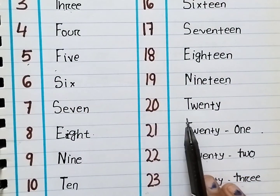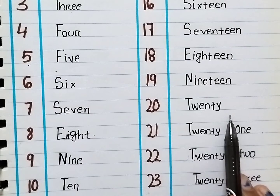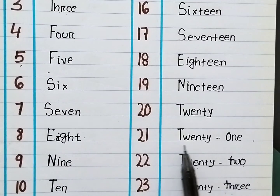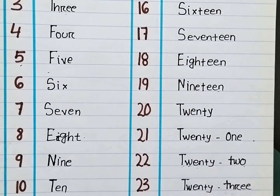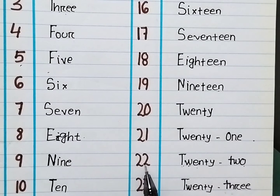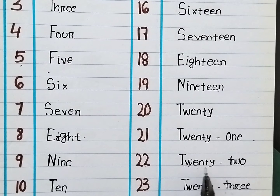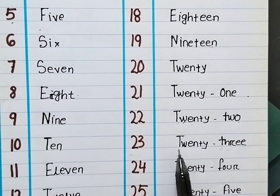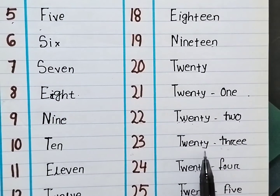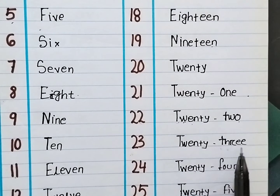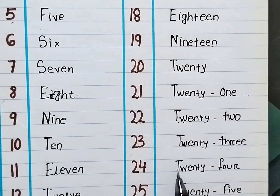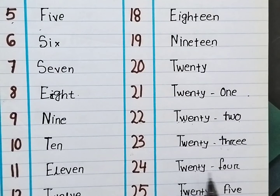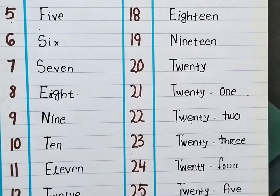20. T-W-E-N-T-Y 20. 21. T-W-E-N-T-Y O-N-E 21. 22. T-W-E-N-T-Y T-W-O 22. 23. T-W-E-N-T-Y T-H-R-E-E 23. 24. T-W-E-N-T-Y F-O-U-R 24.